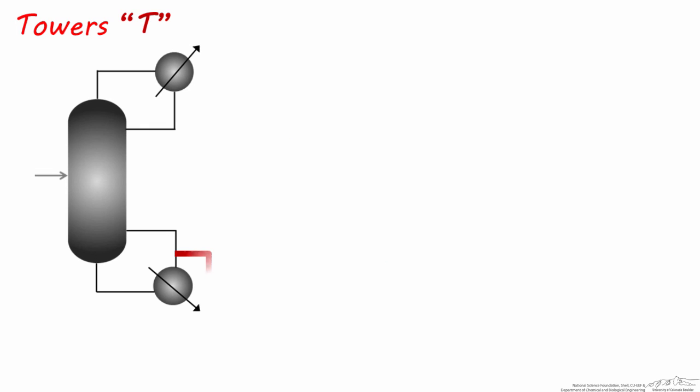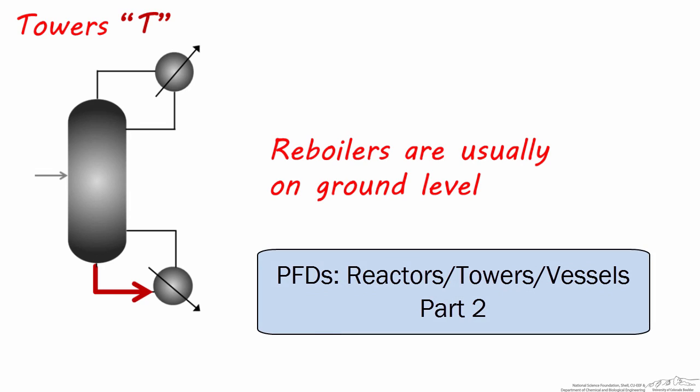Similarly, reboilers are usually placed on the ground since this allows the bottom stream to flow by gravity to the heat exchanger, and vapor can rise up to the base of the column.